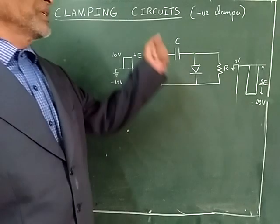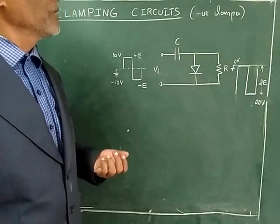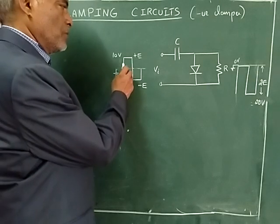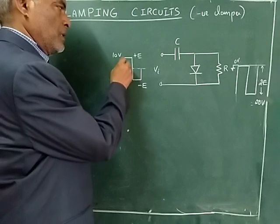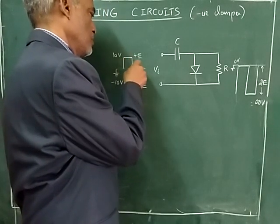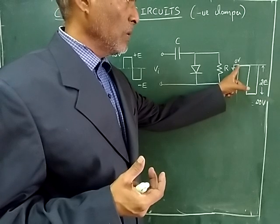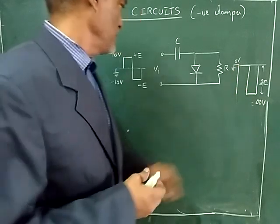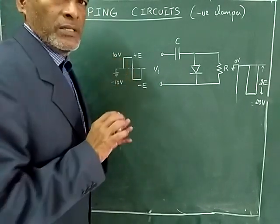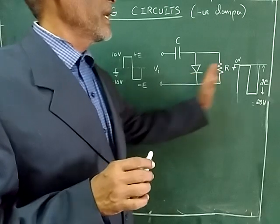Today we are going to see about clamping circuits — positive clamper, negative clamper, and biased clamper. This is an example of a negative clamper. If you assume a square wave at zero ground, with 10 volts and minus 10 volts, the clamping action shifts the entire waveform in the negative direction. We will see how this circuit converts a waveform into a clamped waveform in the negative direction.